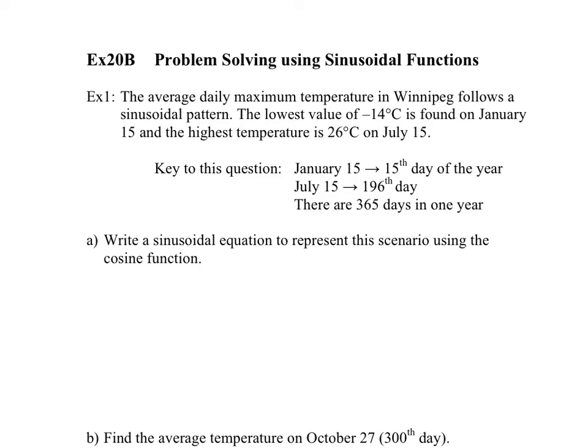And the highest temperature in July, sorry, January 15th, the highest temperature is 26 degrees on average on July 15th. So this is the average high. We could do a different one for the average low.